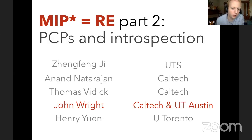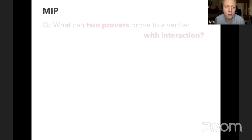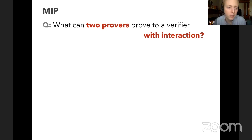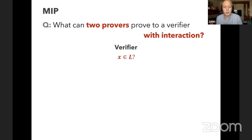I'll start by reminding everyone of the definition of MIP — not MIP*, just MIP. It's a classical complexity class you'd consider when asking: what can two provers prove to a verifier with interaction? The verifier has a computational problem L and an input instance x, and wants to know if x is in language L or not.